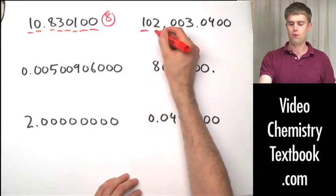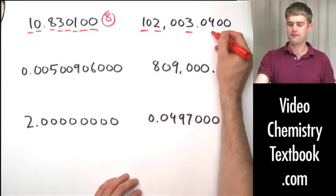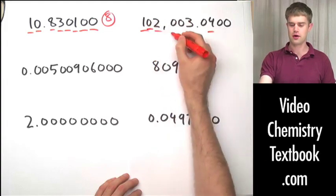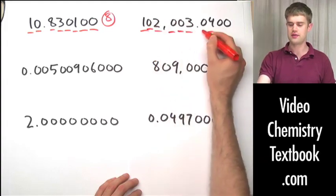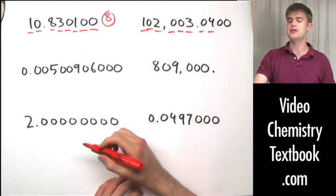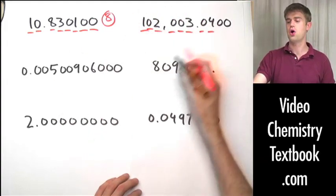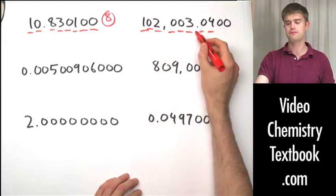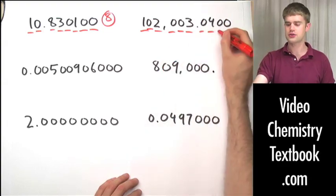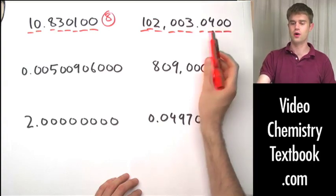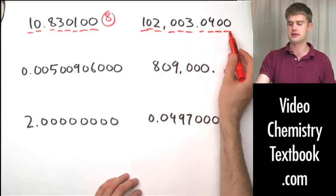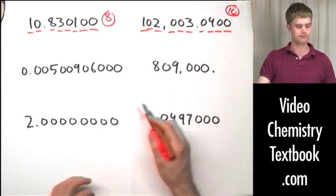Look at this number. We have several non-zero significant digits. Every zero — this one, this one, this one, and the one sandwiched between them — is significant. Are the trailing zeros significant? It's to the right, and there is a decimal point, so yes. Every single one of them is significant. Ten total significant figures.